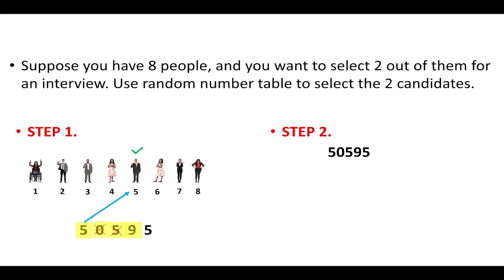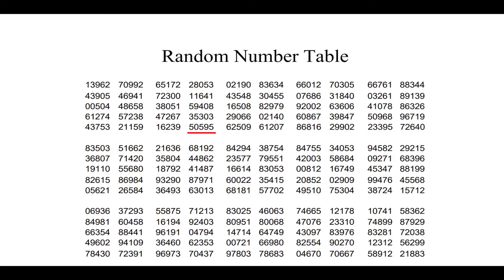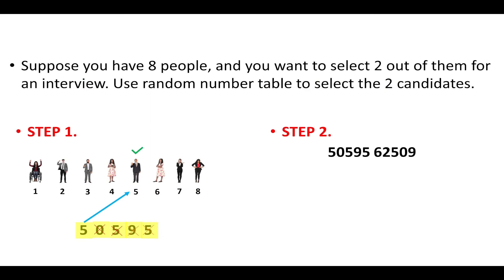The next digit is 9 — since that number is not used by us, we reject it. Again, the next digit is 5 and as it has already been allotted, we reject it again. Now we move to the next random number, which is 62509. The first digit is 6, so we select the 6th person.